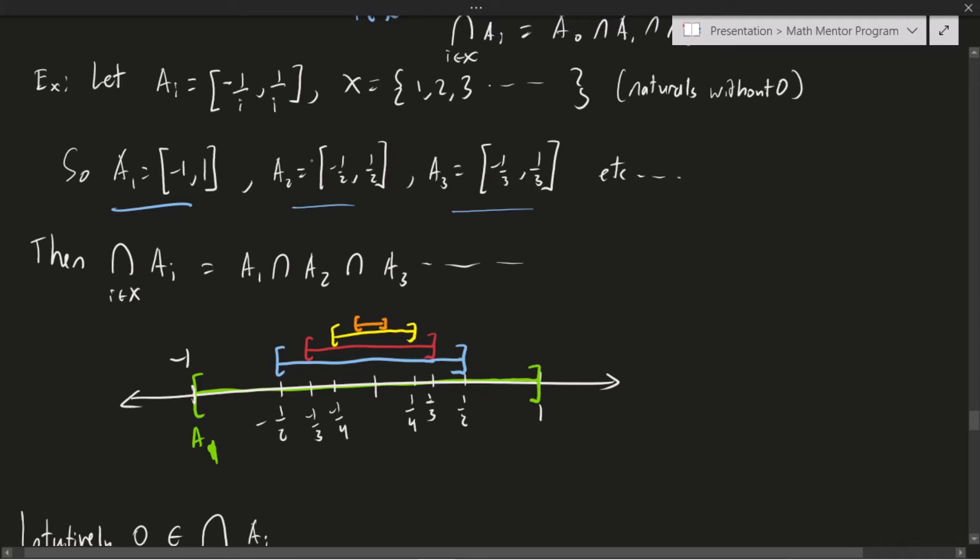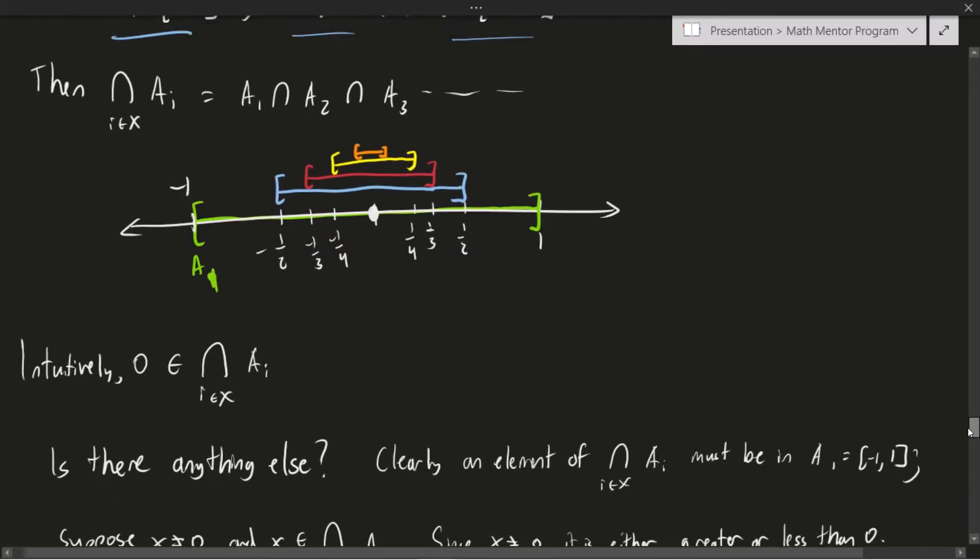And the intersection has to be some point that is contained across all of these. Okay. So for example, zero is clearly in the intersection of all of these. You can actually verify that quite easily just by thinking about what the form of each of these sets are. They're always of the form negative one over i to one over i. And so a zero can fit very nicely in between those two. Okay. Is there anything else other than zero though?